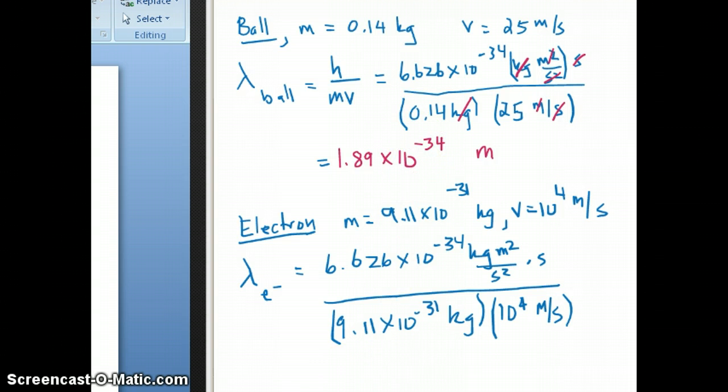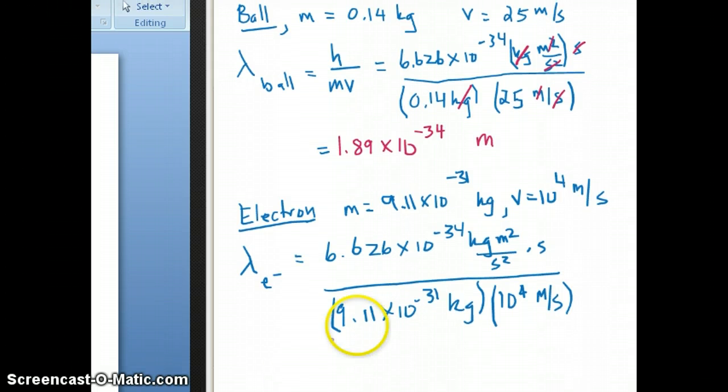On the other hand, if you were to plug in the same equation, but in this case using the mass of the electron instead, which is 9.11 times 10 to the minus 31, this is a number you can obtain from an online source or from your textbook. So you'll find that your answer would be in the order of 7.27 times 10 to the minus 8 meter.